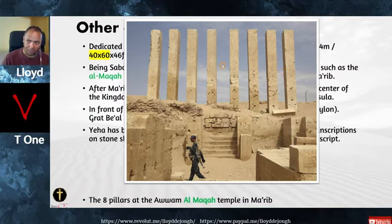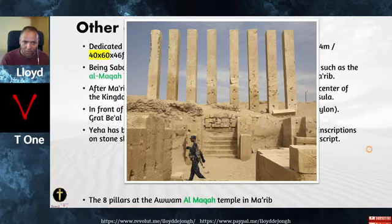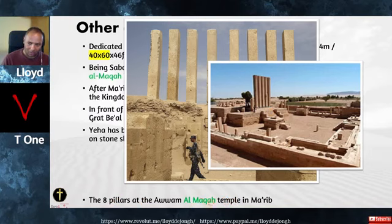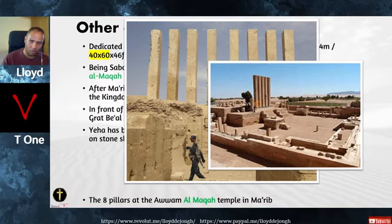These are the 8 pillars at the Awam Temple to Al-Makka in Marib. This other one has 6 pillars — this pillar is broken off. Six pillars give you 5 spaces — these are your 5 ways to get to God, and those are your 5 prayers. So 5 spaces equals 5 prayers, 8 pillars equals 7 prayers. It's like denominations — simply different denominations of the same pagan church with slight differences between them.